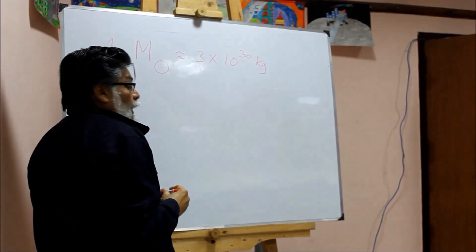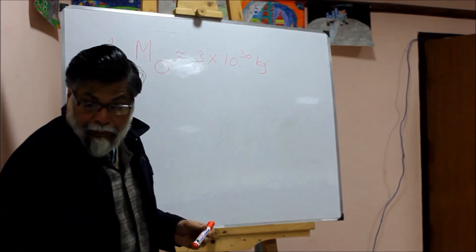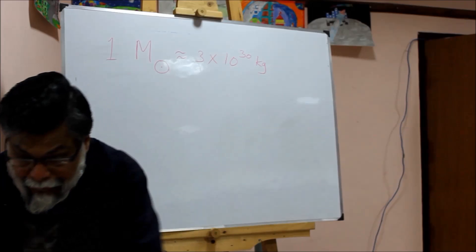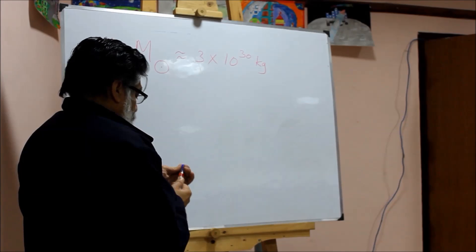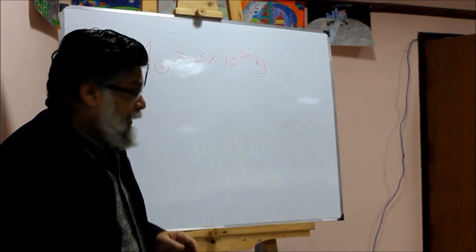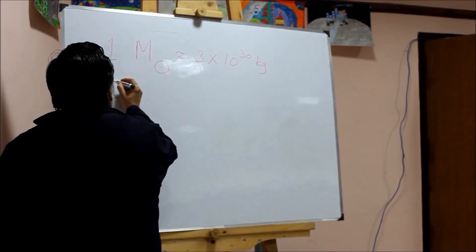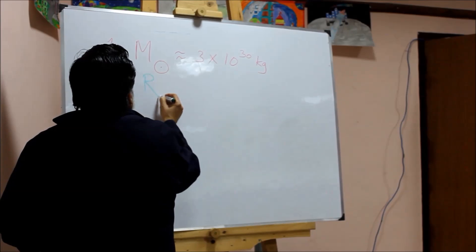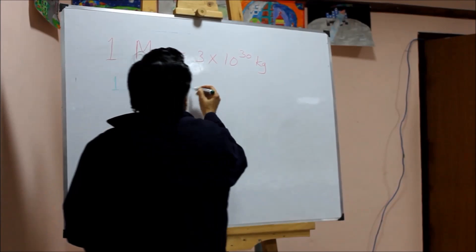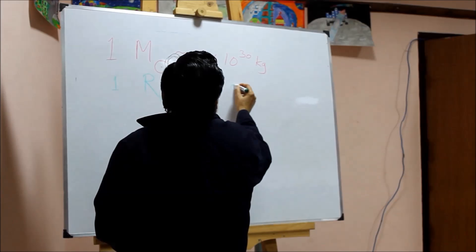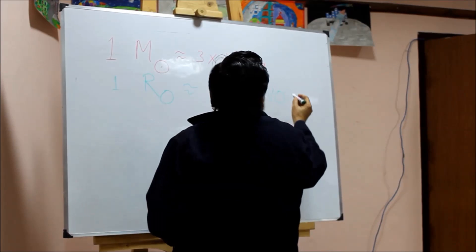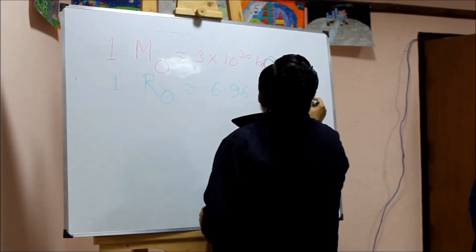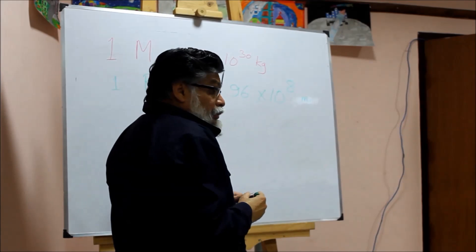And it's a huge object, and the radius of the Sun, one solar radius, is about 6.96 × 10^8 meters. So it's a huge object.